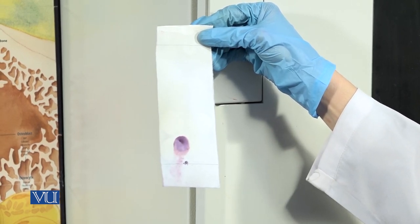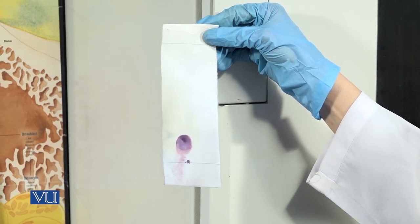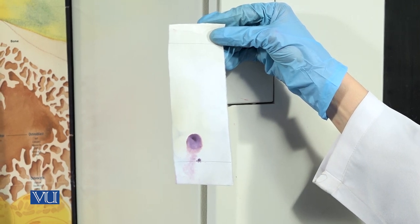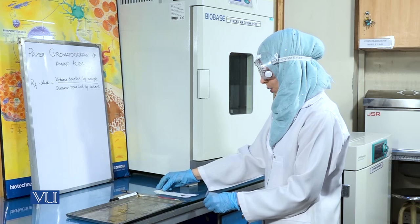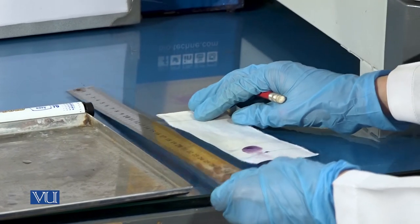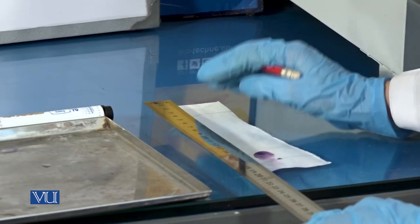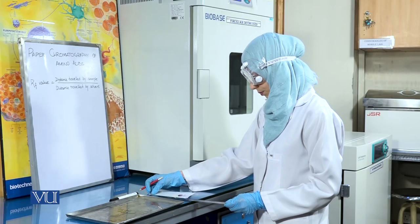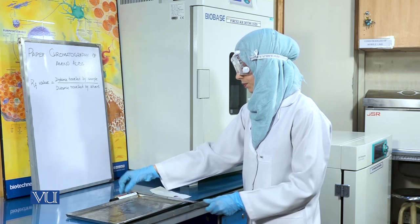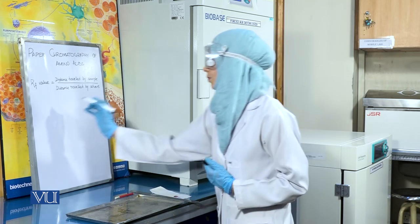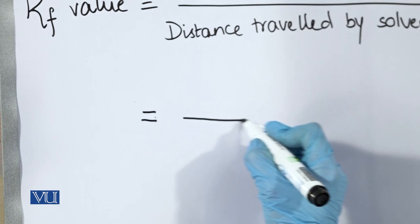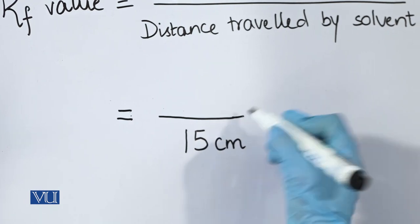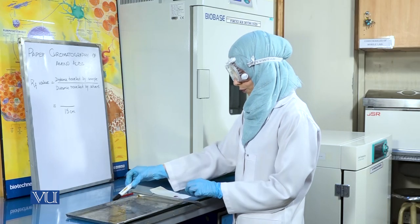We will now proceed towards the calculation of the RF value or the retardation factor, also known as relative mobility or retention factor. For this, we will first measure the distance travelled by the solvent on the filter paper. We have already marked the solvent front. This comes out to be 15 cm for our sample.